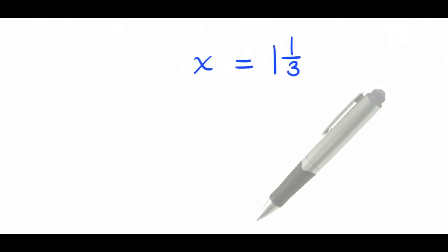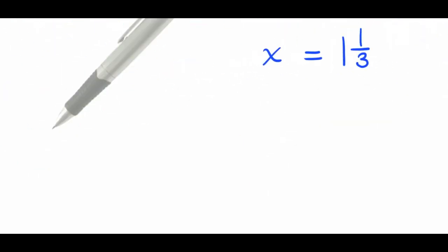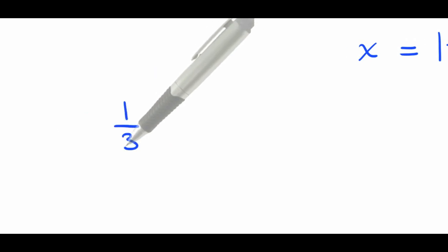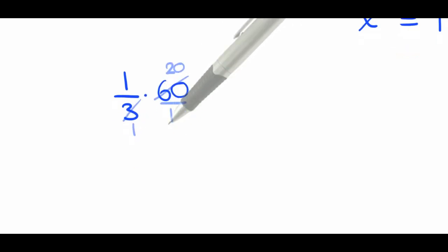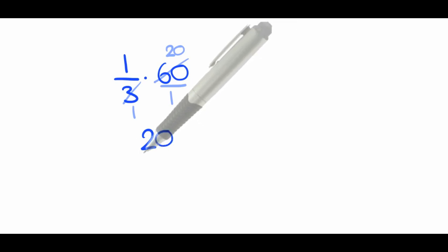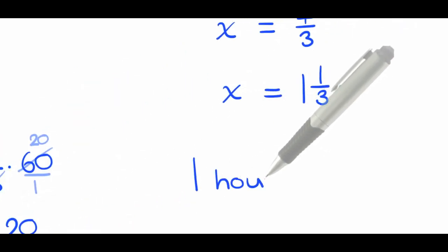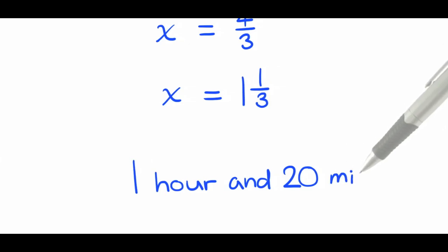Now exactly what is 1 and 1 third hours? 1 is 1 hour. And 1 third of an hour? A fraction of an hour, we multiply it by 60 to get minutes. Next, put 1 underneath 60, cross-cancel. 3 goes into itself 1 time, 60 goes 20 times. We're left with 20 over 1, which is 20. So the amount of time or the answer is 1 hour and 20 minutes.